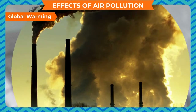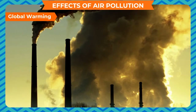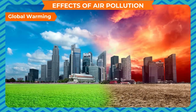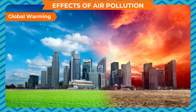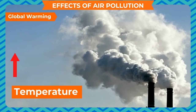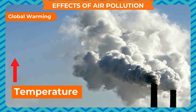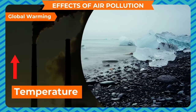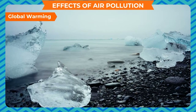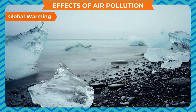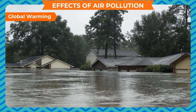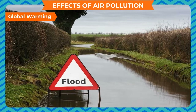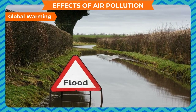Effects of air pollution include global warming. Air pollution increases the quantity of carbon monoxide and carbon dioxide in the air. Our atmosphere becomes hotter because these gases trap the heat of the sun, thus increasing the temperature of the atmosphere — a phenomenon called global warming. Global warming may also be responsible for melting of ice caps and glaciers at the poles, potentially causing flooding of low-lying land and changing the climate of the whole world.